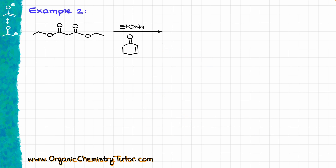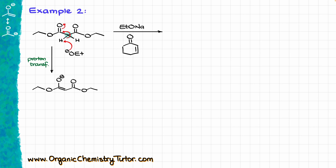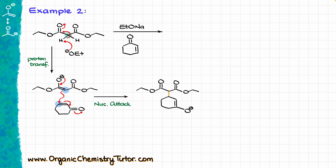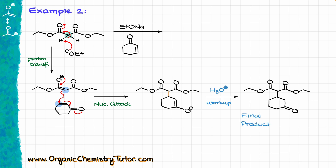How about this next reaction? My analysis again starts with finding the most acidic position to enolize, which is again the position between the carbonyls. Step one: ethoxide comes in and enolizes that position, giving the corresponding enolate as my nucleophile. Next, I bring the electrophile — my alpha-beta unsaturated compound — and do a nucleophilic attack, making a new carbon-carbon bond between the alpha position between my carbonyls and the beta position of my alpha-beta unsaturated compound, making the enolate intermediate, then giving the final product after acidic workup.